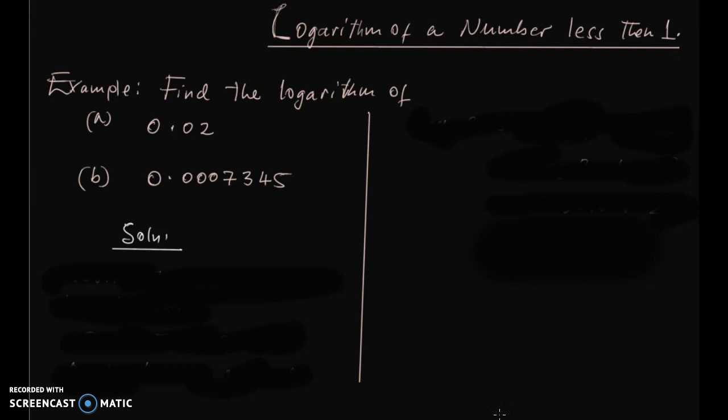The different thing here is that when we have a number raised to negative exponents, if you have b to the negative exponent, for example if we have 0.0007345, when we write it in standard form we have 7.345 times 10 to the power negative 4.